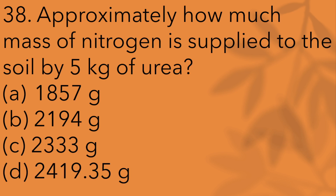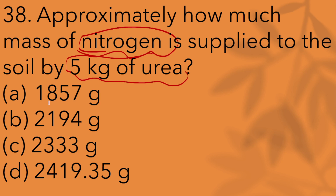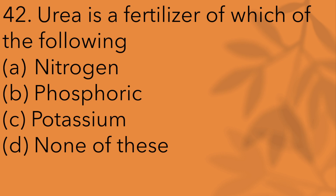Approximately how much mass of nitrogen is supplied to the soil by 5 kg of urea? Options are 877g, 294g, and 233g. Urea is a fertilizer of nitrogen — not phosphorus, potassium, or none of the above.